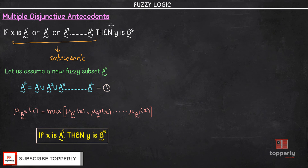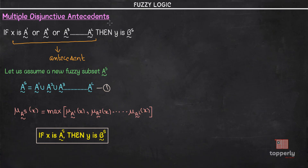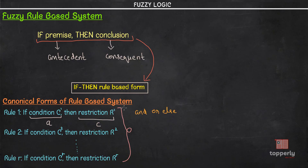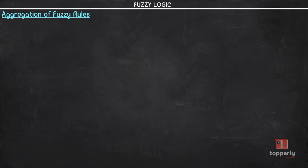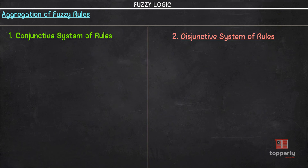So we have seen multiple disjunctive and conjunctive antecedents. Coming back to the rule-based system, most rule-based systems have more than one rule. The process of obtaining the overall consequent or conclusion from individual consequences contributed by each rule is called the aggregation of rules. That is, if you combine the restrictions or conclusions from each of the rules, the combination of all of them is called aggregation of rules. In aggregation of fuzzy rules, we combine the consequences of multiple rules together to get an aggregated output, and there are two different ways: the conjunctive system of rules and the disjunctive system of rules.